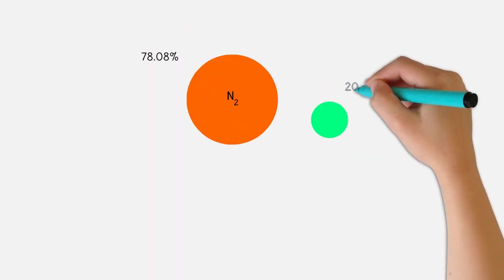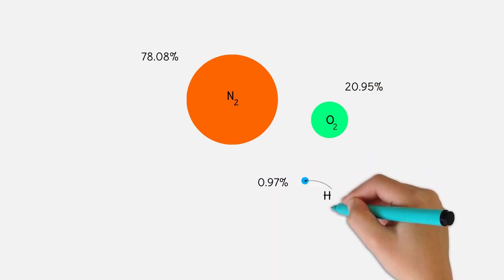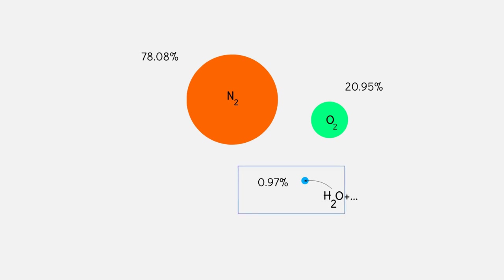The atmosphere consists of 78% nitrogen and 21% oxygen. The remaining 1% contains water, carbon dioxide, and other gases. In this video, we will focus on the water, especially the water vapor.